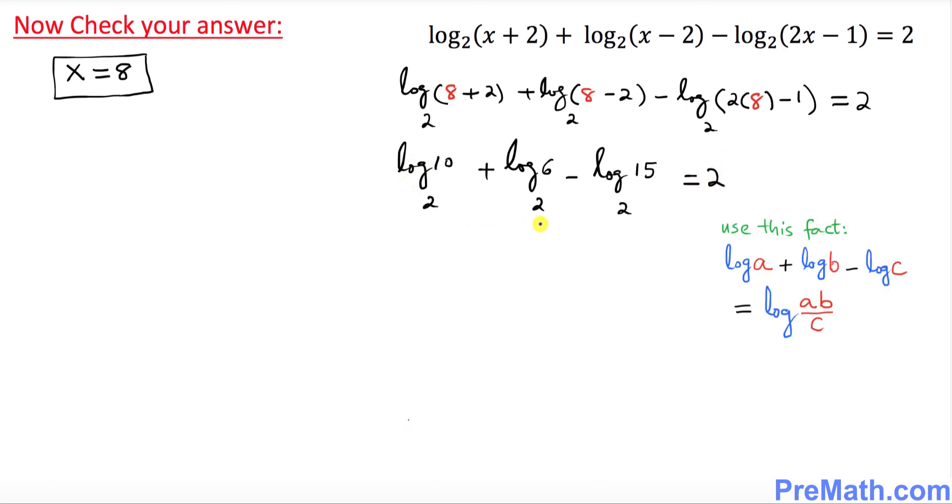Now we want to compress the left hand side by using this fact again. So this could be written as log of 10 times 6 divided by 15 with a base 2 equals to 2. So this becomes log of on the top, on the top is 60 divided by 15 with a base 2 equals to 2.